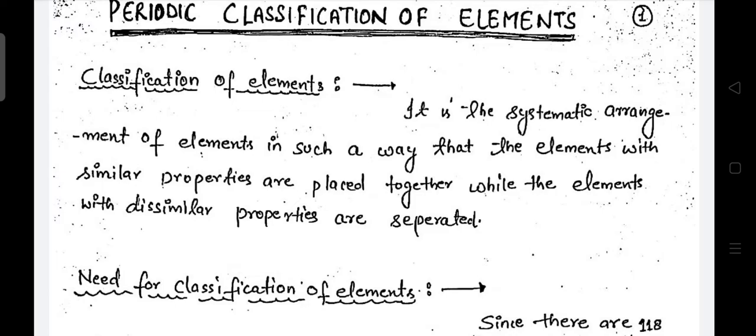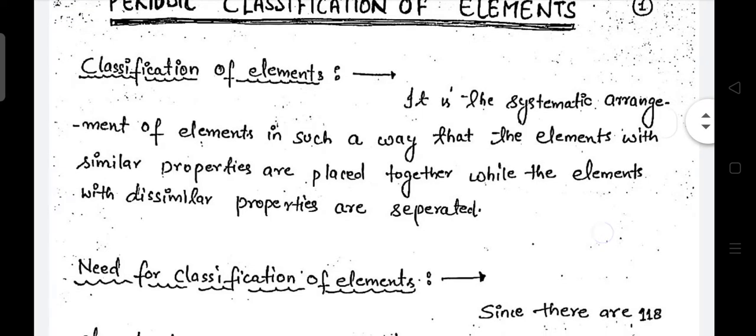What is classification of elements? Students, when there were many elements and their number kept increasing through discovery, classification became necessary. It is the systematic arrangement of elements in such a way that the elements with similar properties are placed together while the elements with dissimilar properties are separated. When we had many elements, studying them together and remembering them wasn't easy, so classification of elements became necessary.